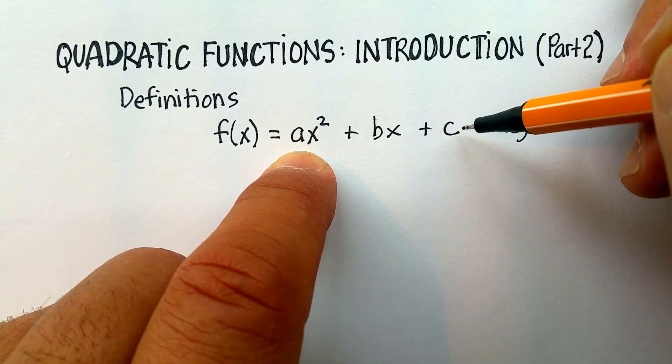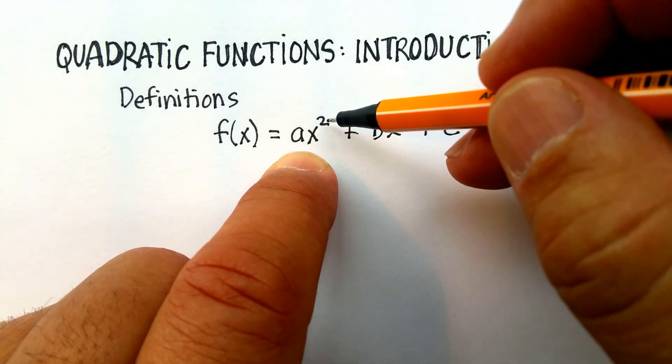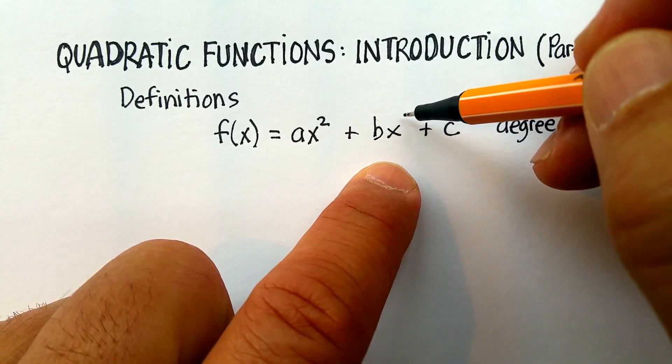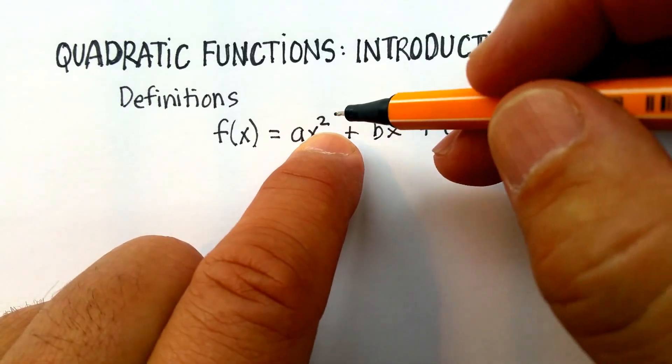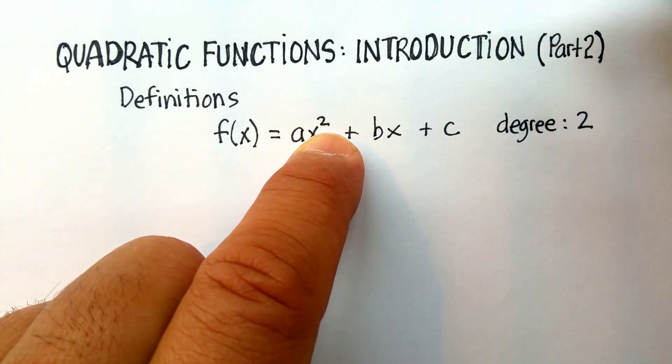So, for example, in this particular trinomial, if you look at this exponent, it's two. This exponent's one. So, the degree of this one would be the largest one, which is two.